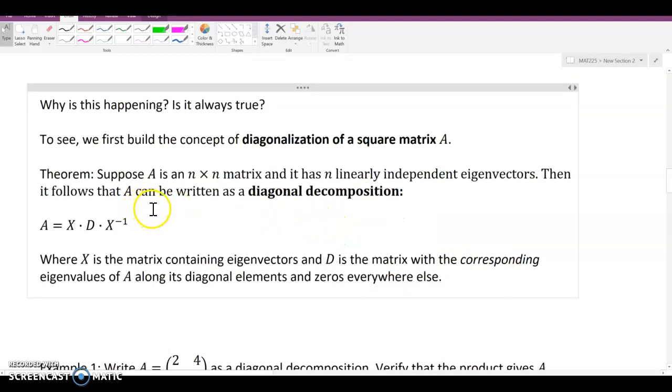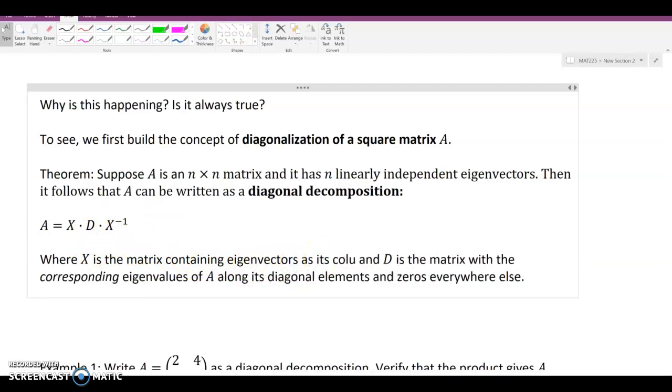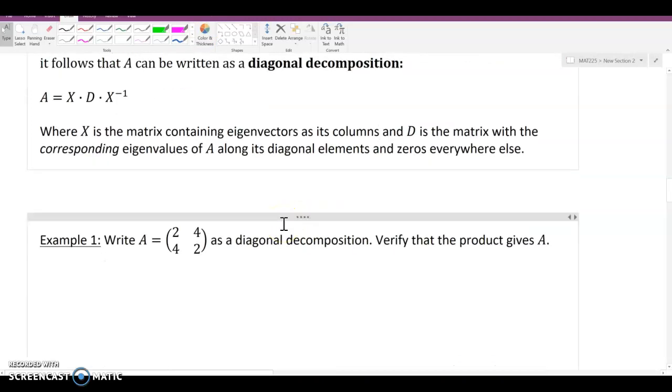Then it follows that A can be written as a diagonal decomposition. So A can be factored apart into three matrices, X times D times X inverse. What X contains in it is the matrix containing eigenvectors as its columns. And D is the matrix with the corresponding eigenvalues of A along its diagonal elements and zeros everywhere else.